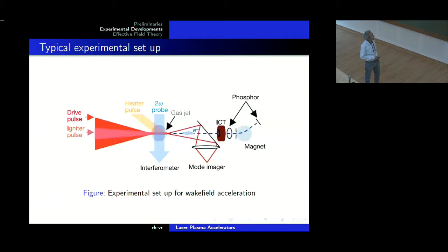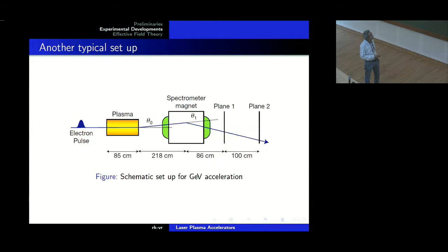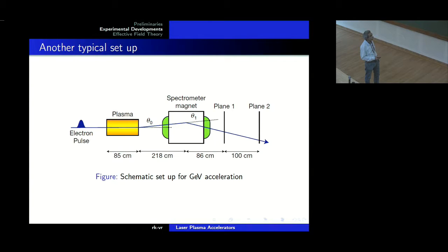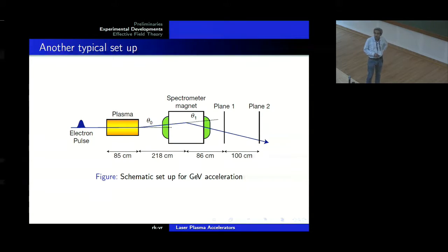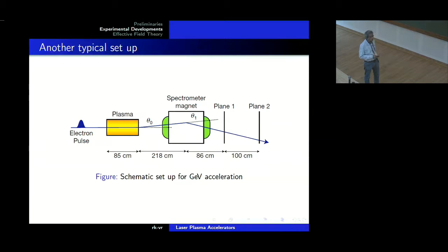There is this kind of figure where you send a drive pulse and it goes through the plasma — this is for a GeV acceleration. I think this is from one of the papers of Joshi's UCLA group, where you see there is an electron pulse which comes, goes through the plasma, is accelerated, and there is a spectrometer magnet. The length scales are important: 85 centimeter, 280, 86 — this is in the range of about 100 centimeters. I believe the latest is that they are able to produce beams of about 48 GeV, which is an enormous number.